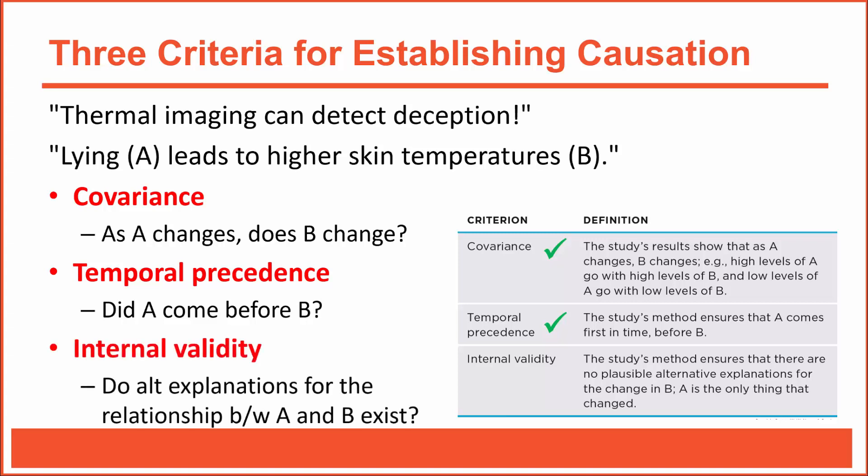The final criterion necessary for establishing causation is internal validity. A research study is internally valid when there's only one plausible explanation for the differences we see — in this case, the differences in skin temperatures between suspects who lied and suspects who told the truth. In other words, is lying the only plausible reason for the differences we see in skin temperatures? Internal validity is critically important for establishing causation, because if another plausible explanation exists, then we'll be left somewhat confused, because we won't know exactly which factor was responsible for the differences in skin temperatures.